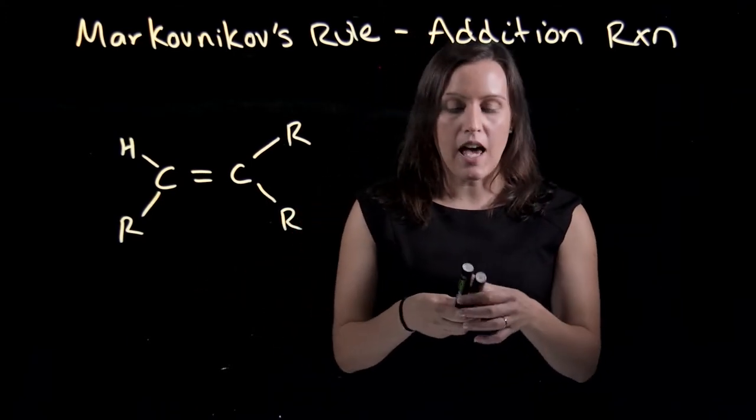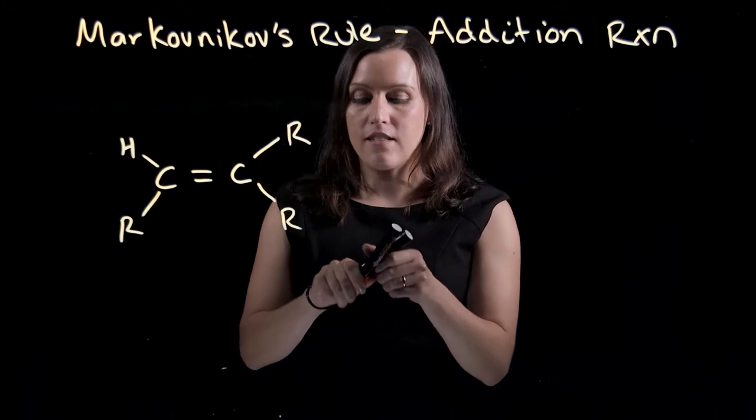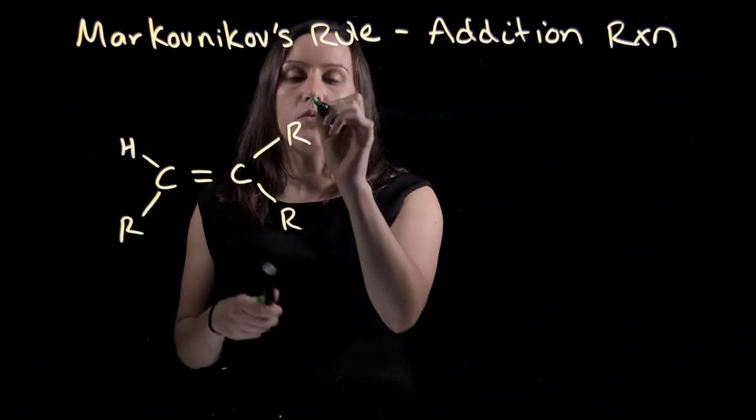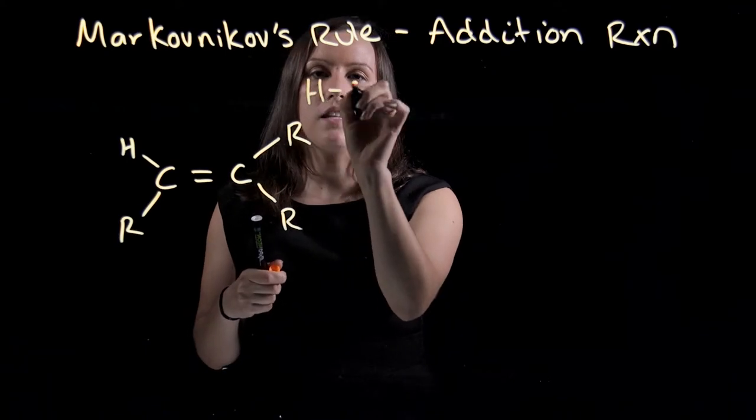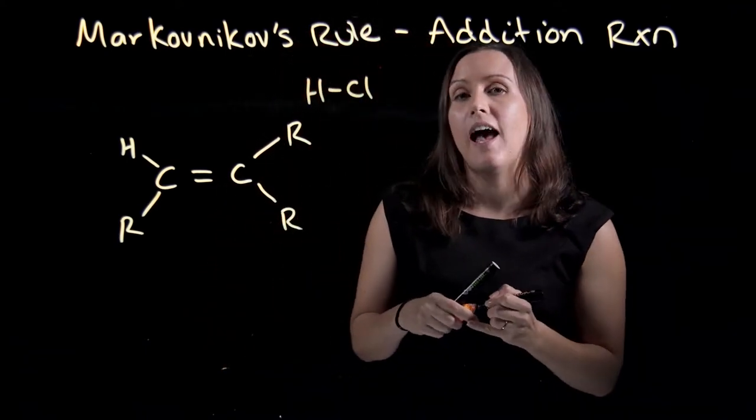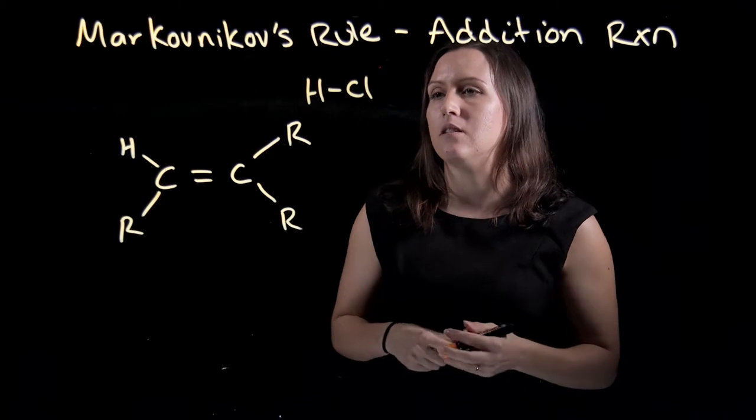With this one here, we're going to be adding an unsymmetrical acid across the double bond. Let's look at HCl as our acid that we're going to be adding onto this molecule.